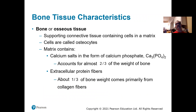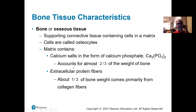Most of the skeletal system is made of bone, or osseous tissue, which is a connective tissue — meaning the cells are pretty far apart with a lot of matrix between them. The cells in bone are called osteocytes; anytime you see the prefix 'osteo,' that tells you bone. Two-thirds of the weight of bone is made up of calcium salts — calcium phosphate — which gives bone its dense, rigid quality. There are also collagen protein fibers outside the cells that give bone strength and stability.